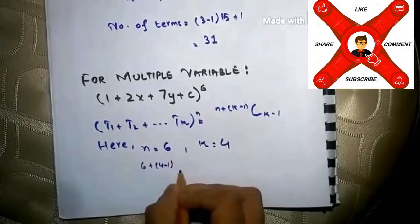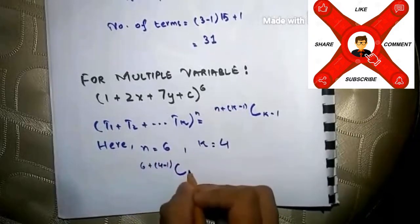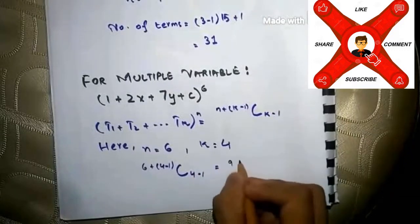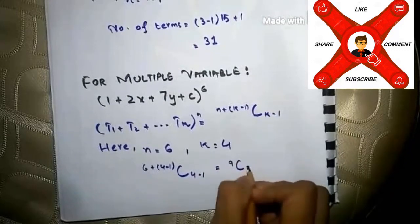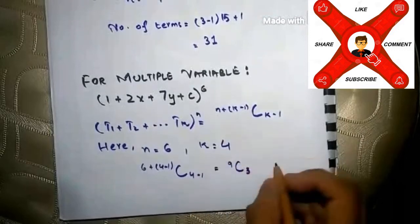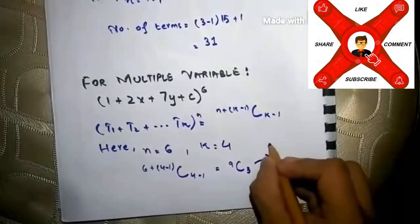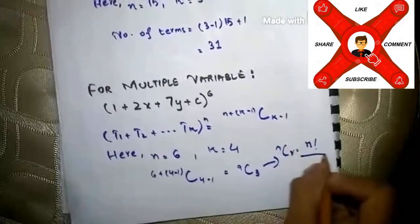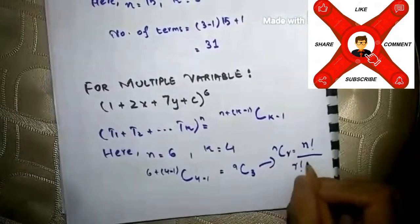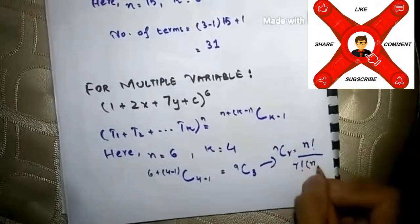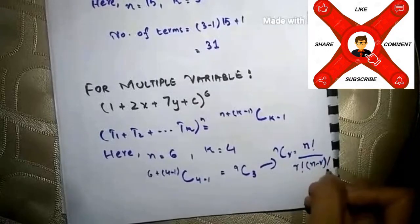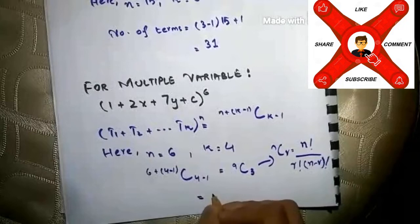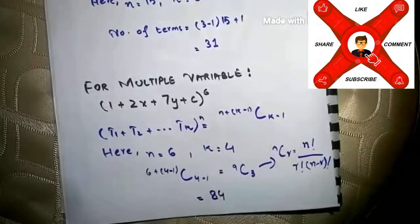In this expansion, n is 6 and k is 4. We put it in the formula: 6 plus 4 minus 1 combination 4 minus 1, which gives us 9 combination 3. The formula for combination is n factorial divided by r factorial times (n minus r) factorial. We can solve it by this formula, or simply use a calculator. Our answer will be 84.